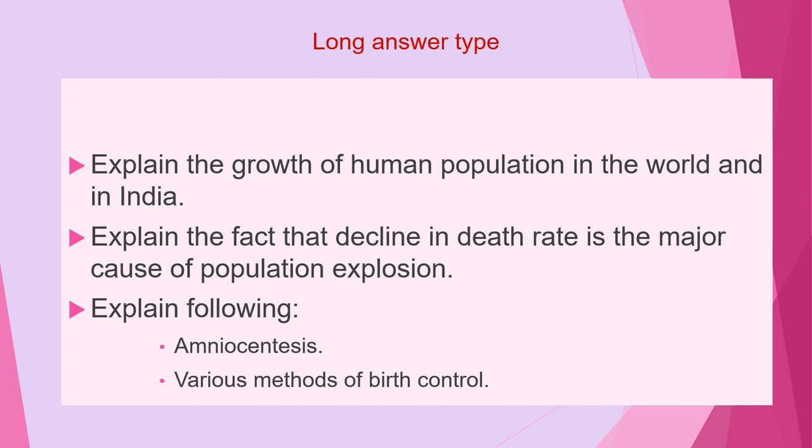Next question is: explain the following — A) amniocentesis, B) various methods of birth control. These are explanatory type of questions, and you have to draw diagrams and flowcharts wherever needed.